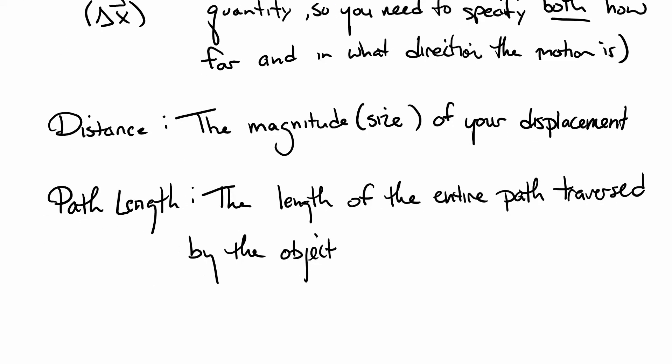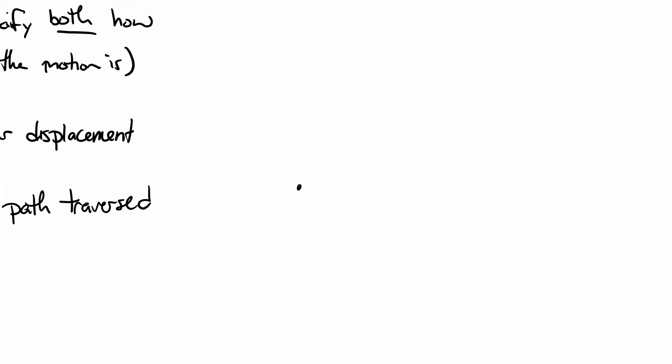And lastly, the path length. This is kind of weird. So let's say that I took this crazy path. I'm going to start here at some position x1. I'm going to wind up here at some position x2. Now I'm going to draw three different paths. One, I'm going to try to draw mostly a straight line. That was mostly a straight line.